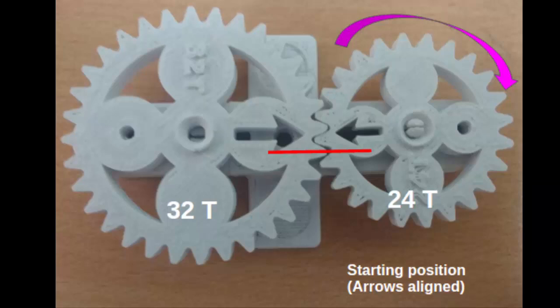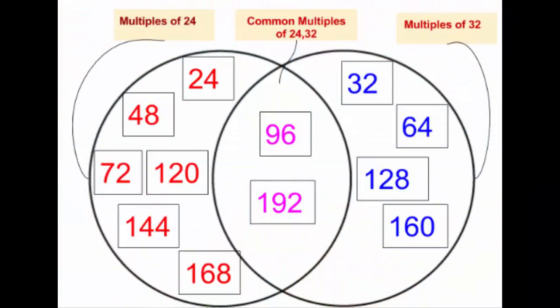Suppose we need to calculate the LCM of 24 and 32. First, we calculate the multiples of 24, which are 24, 48, 72, 96, and so on. Similarly, we calculate the multiples of 32, which are 32, 64, 96, 128, and so on.